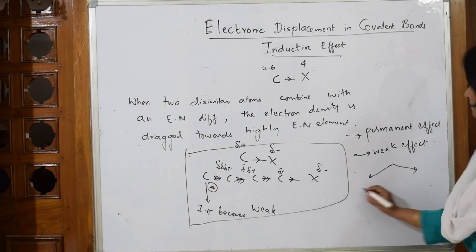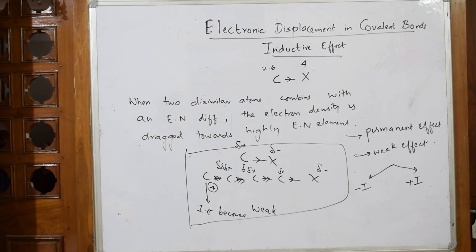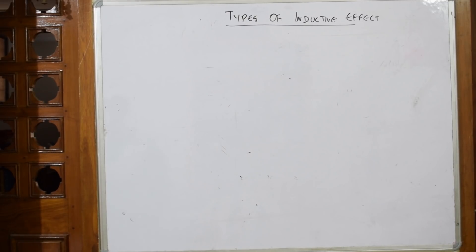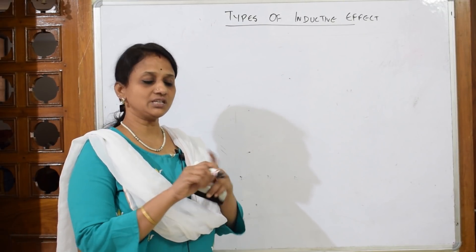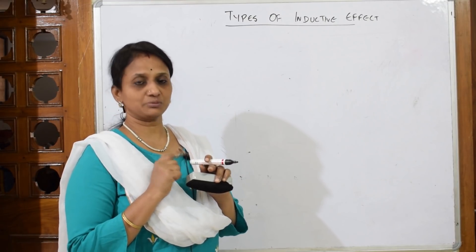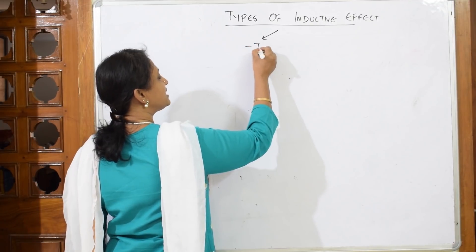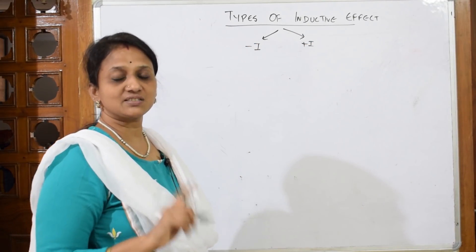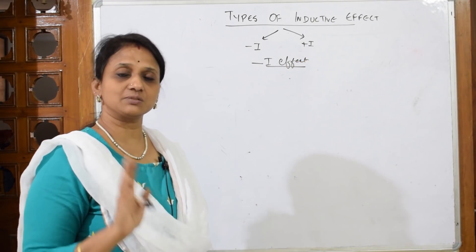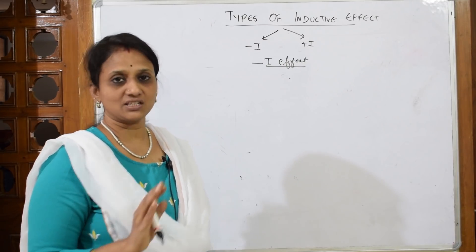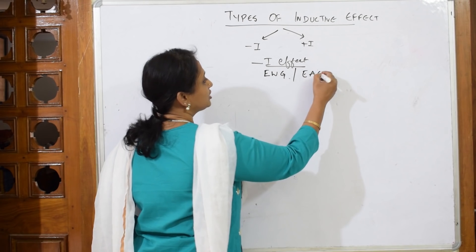The inductive effect is divided into two types: minus-I effect and plus-I effect. Minus-I effect is always shown by electron withdrawing groups (EWG), also called electron attracting groups. Both terms refer to the same thing.